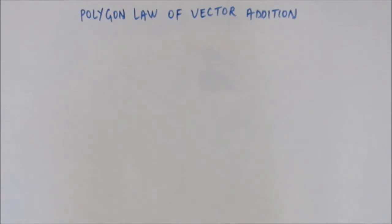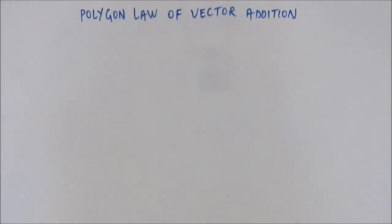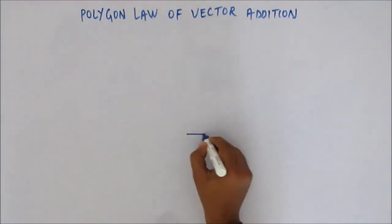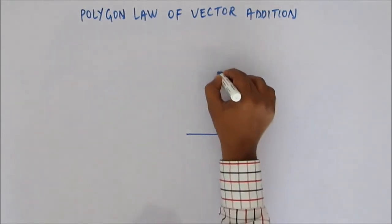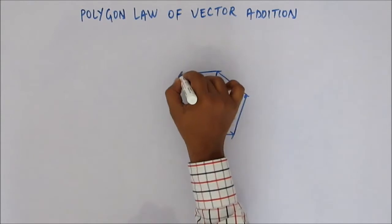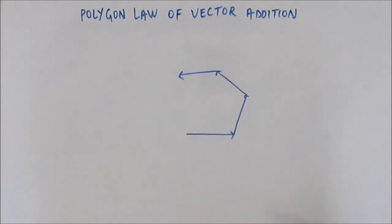Now we'll study what is known as the polygon law of vector addition. The polygon law of vector addition is derived from — it is the outcome of — the triangular law of vector addition. It says that if you have vectors forming n-1 sides of a polygon, then the resultant vector is the nth side of the polygon taken in the reverse order.